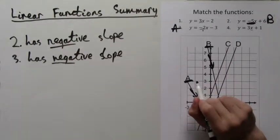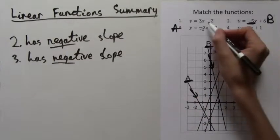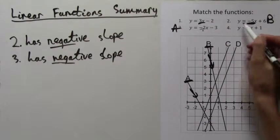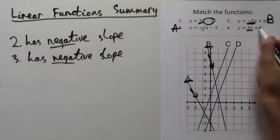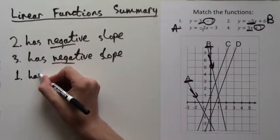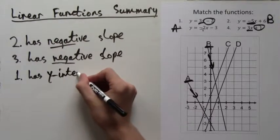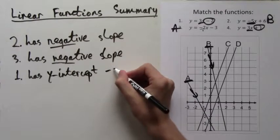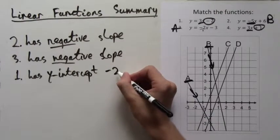Now to the positive sloping functions. Well, both these slopes are equal, so we can't use the slope to help us. But there's still the y-intercept. Function 1 has a y-intercept of negative 2, and function 4 has a y-intercept of positive 1.